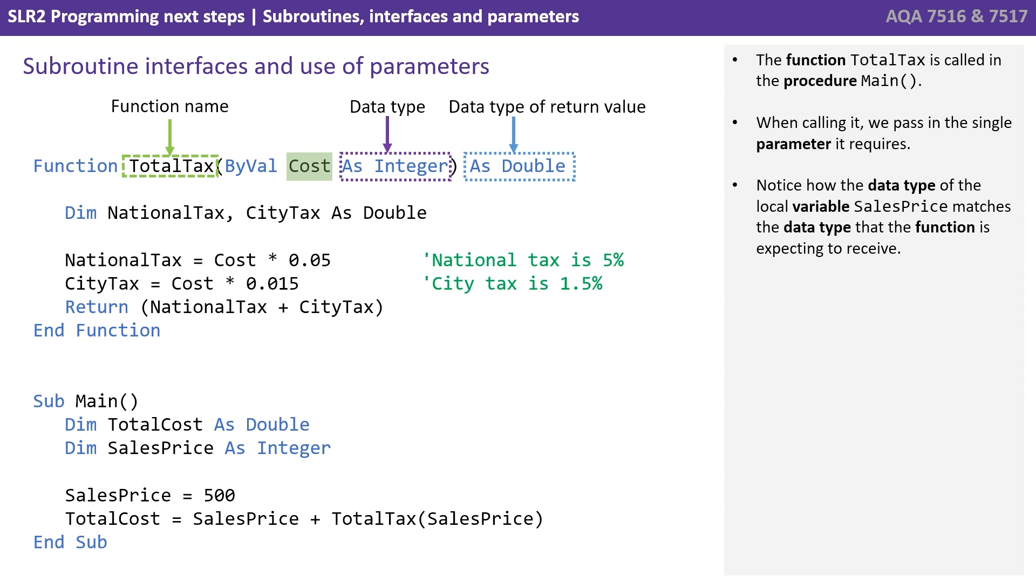The function total tax is called in the procedure main towards the bottom. When calling it, we pass in the single parameter it requires. Notice how the data type of the local variable sales price matches the data type that the function is expecting to receive.